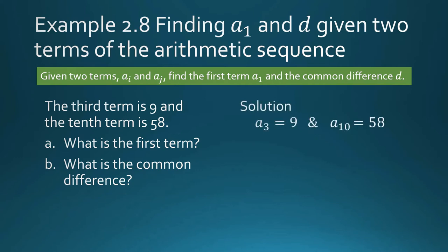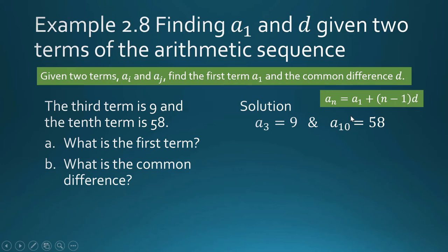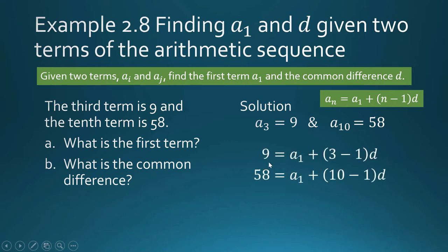We have two unknowns and two known quantities — the third term and the tenth term. Our first job is to produce two equations in two unknowns, and we shall do that using the formula to obtain the nth term of an arithmetic sequence.